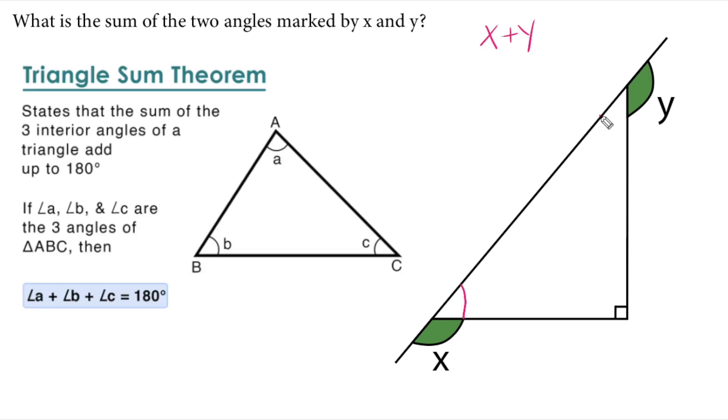Interior angles of a triangle is 180 degrees. The sum of them is 180 degrees.